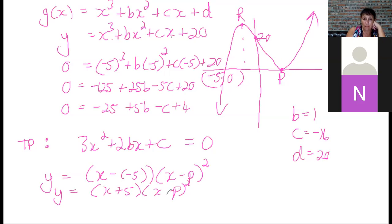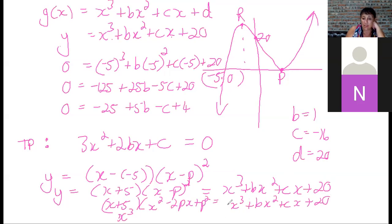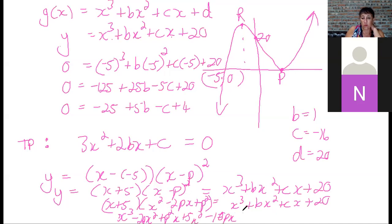Multiplying out (x + 5)(x² − 2px + p²) gives: x cubed − 2px squared + p²x + 5x squared − 10px + 5p squared. Equating this to x cubed + bx squared + cx + 20, I now equate coefficients for each power of x.